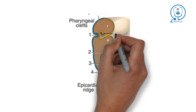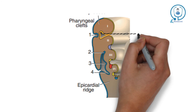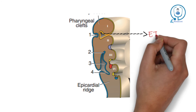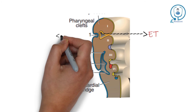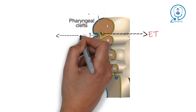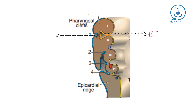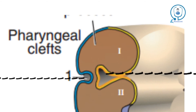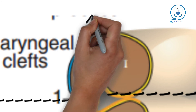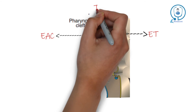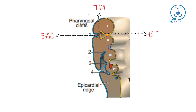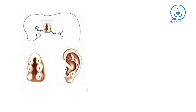What happens to these pouches and clefts? The first pouch starts invaginating inside and forms the Eustachian tube. Similarly, the first cleft starts invaginating inside and forms the external auditory canal. The site where the first pouch and cleft meet is the site of formation of the tympanic membrane. Remember that the tympanic membrane is made up of three germinal layers.